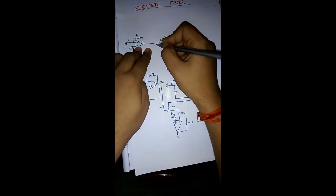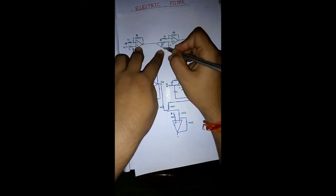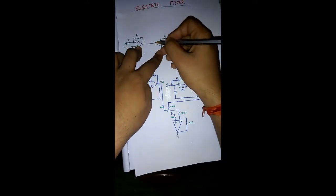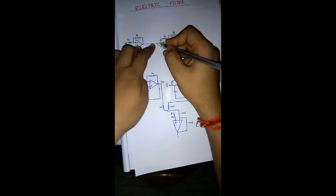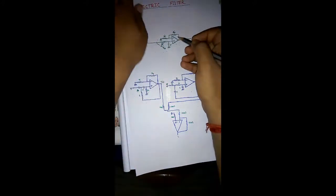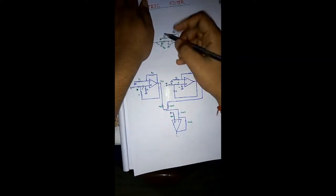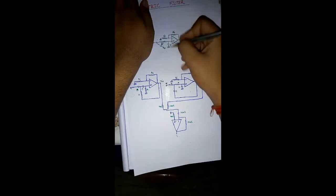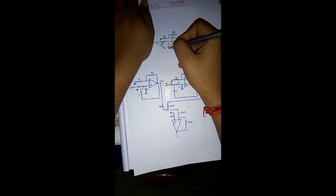The output of the high pass section is connected in series with the low pass filter input. In the low pass filter section, there is a resistor and a capacitor where DC goes through one way and AC goes through another way. Since low frequency or DC voltage acts in that region, this section is the low pass filter.